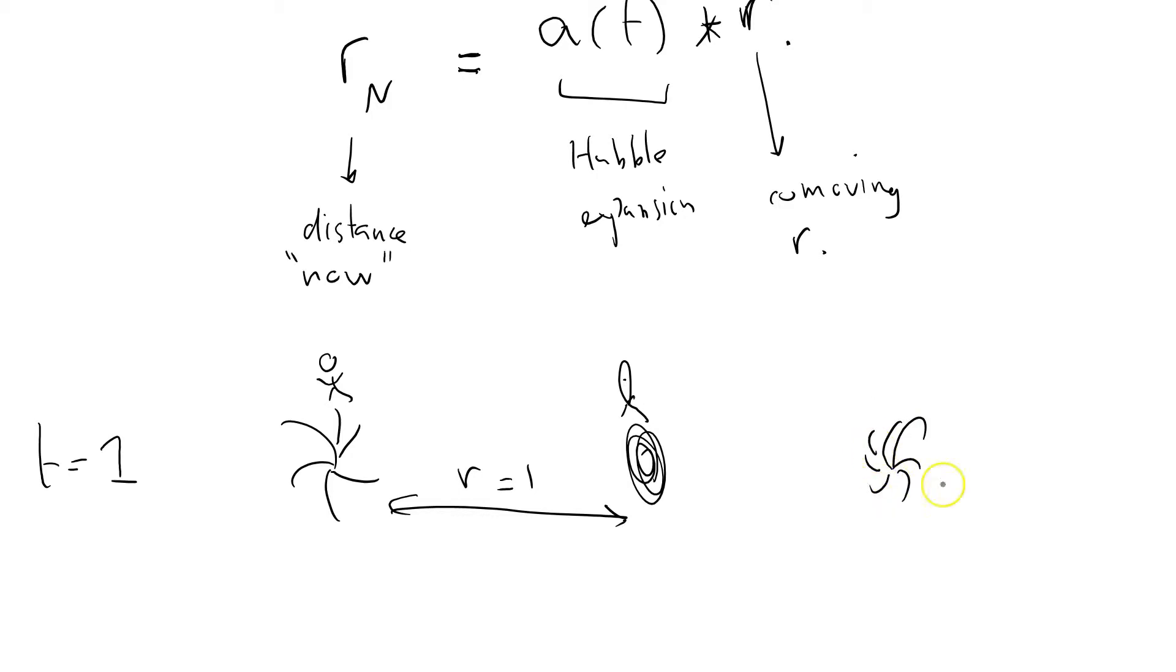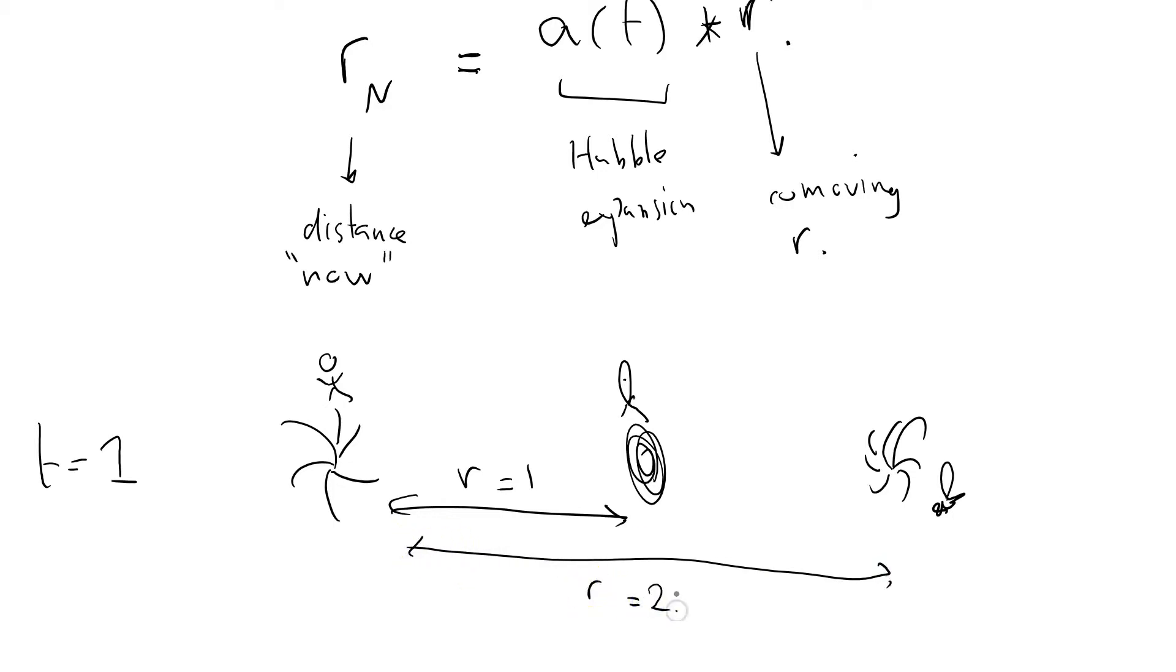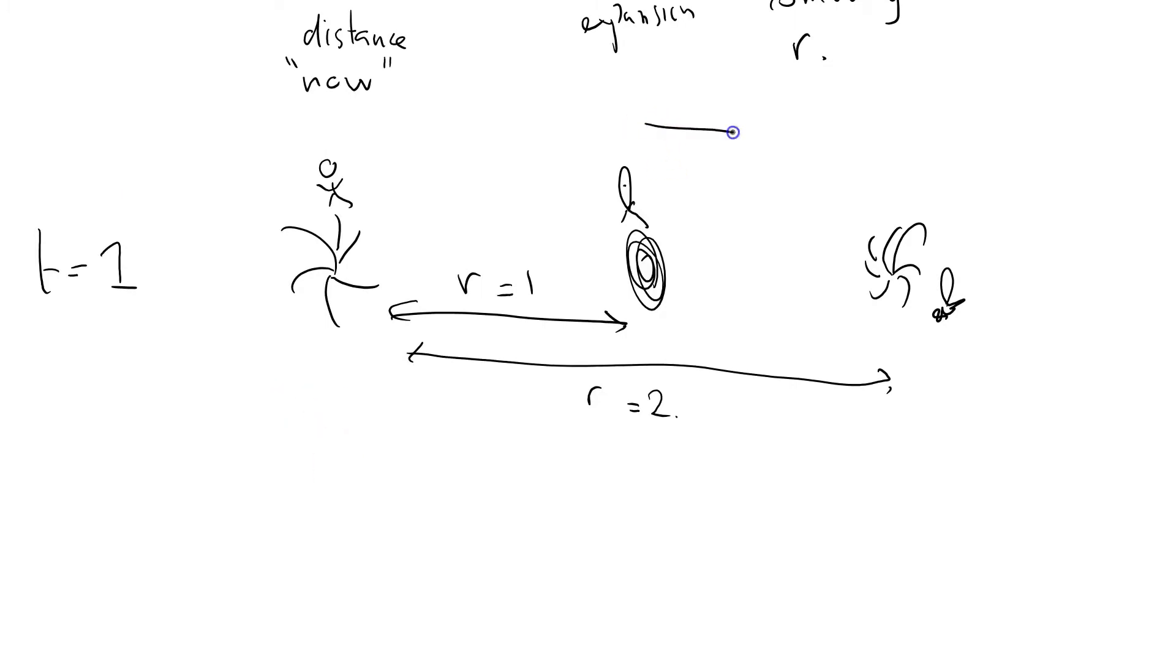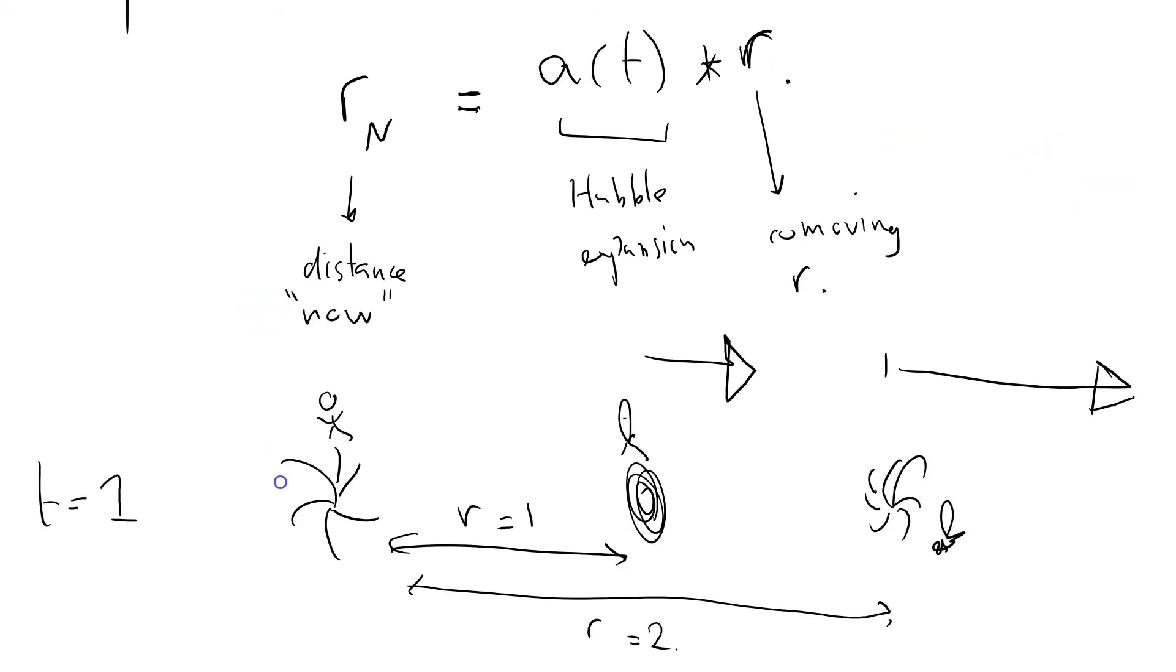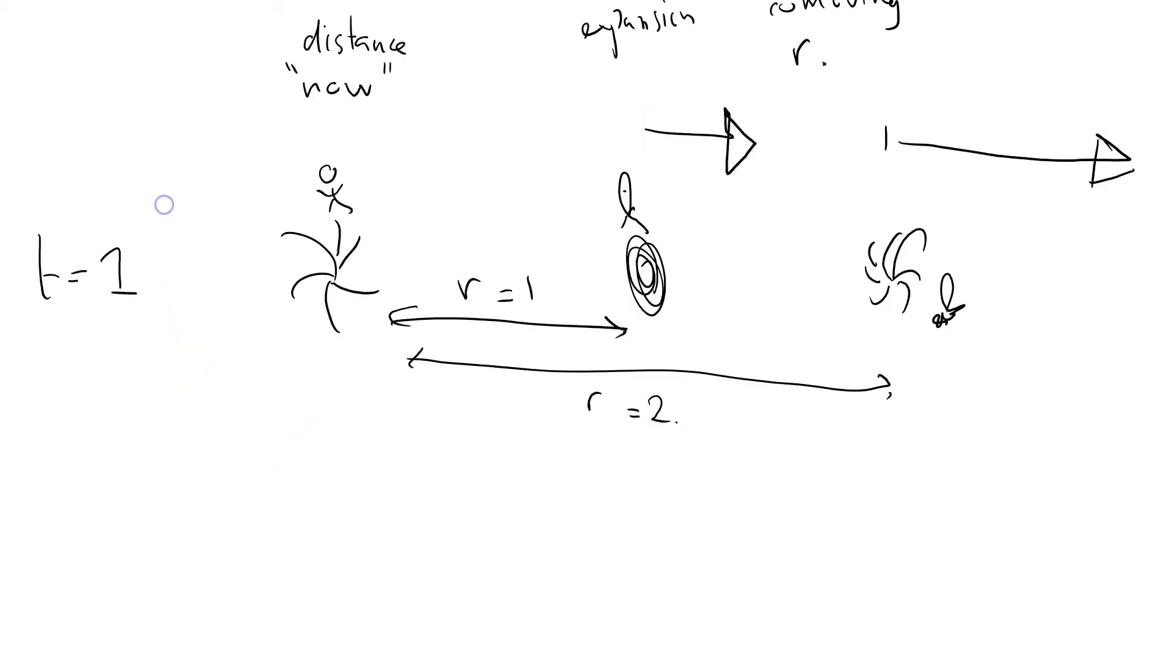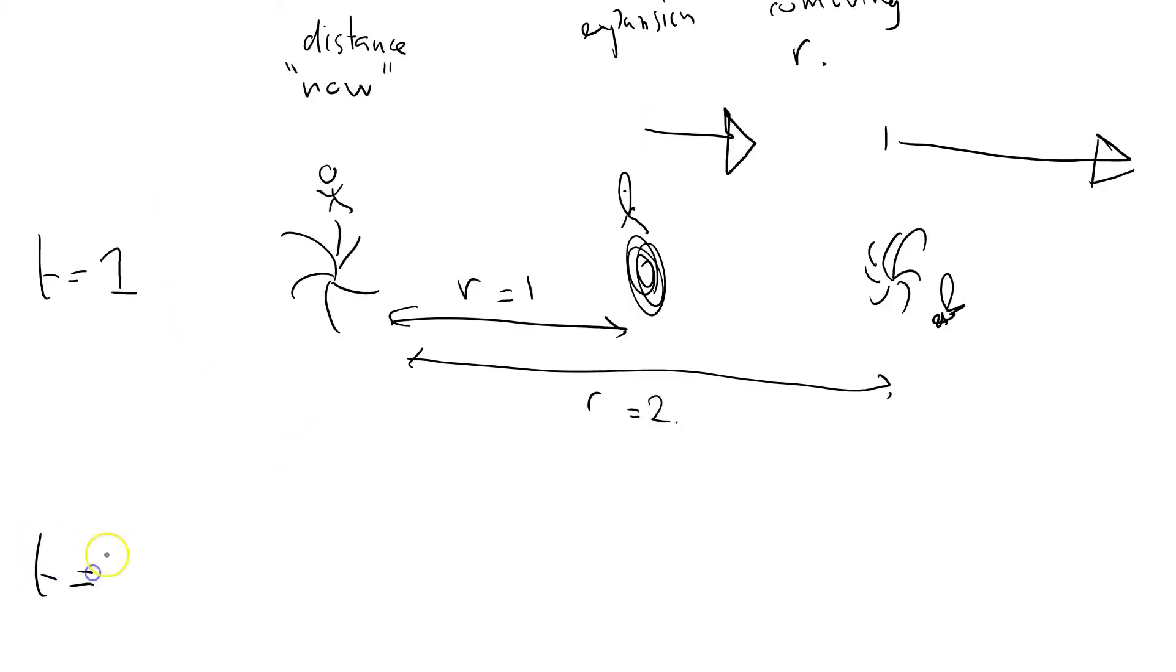Here's another galaxy spinning the other way with another little alien on it. He's at r equals 2. Now time goes by, and he's receding because of the expansion of the universe. This guy's receding faster - twice as fast because he's twice as far away, as this formula would predict. So at t equals 2, we've got me again, the galaxies have moved further away.